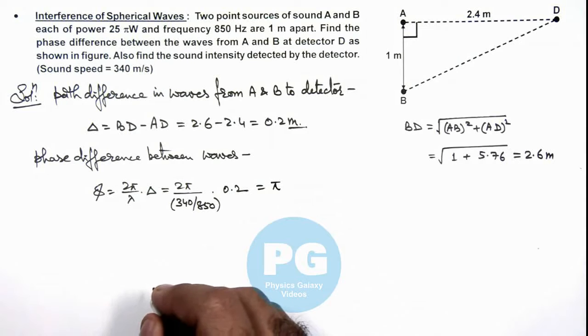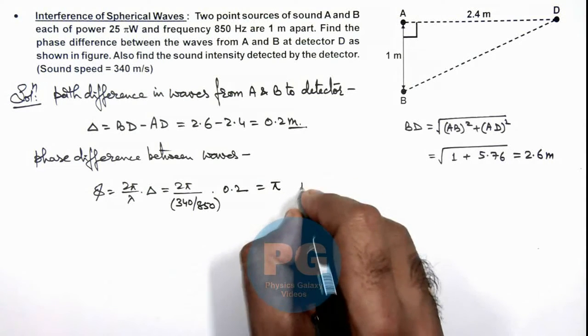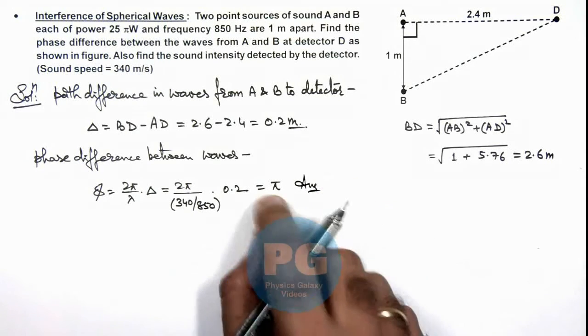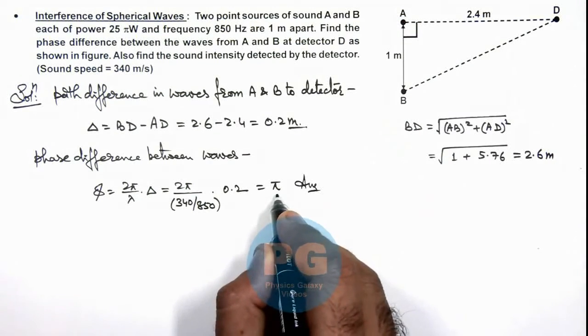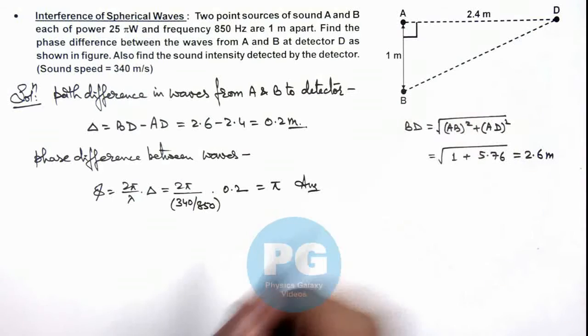If you just analyze and simplify, this gives us the value π. So in this situation, this is one answer for the problem—the phase difference between the two waves at detector. And this π implies the two waves will interfere destructively at detector.